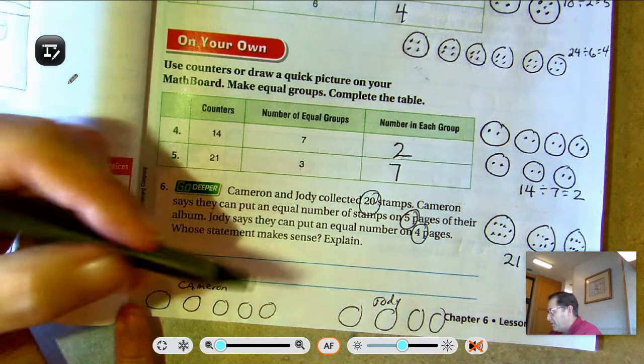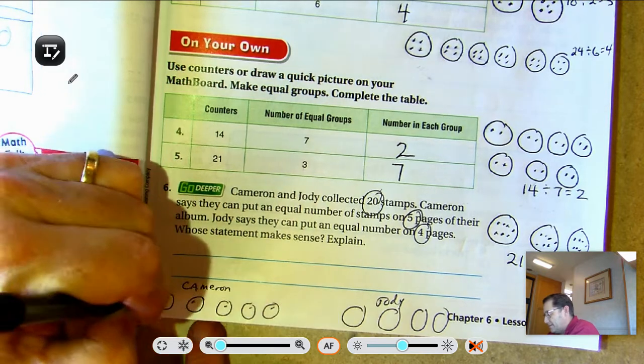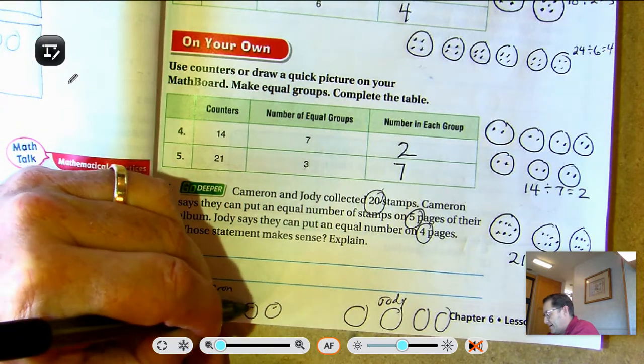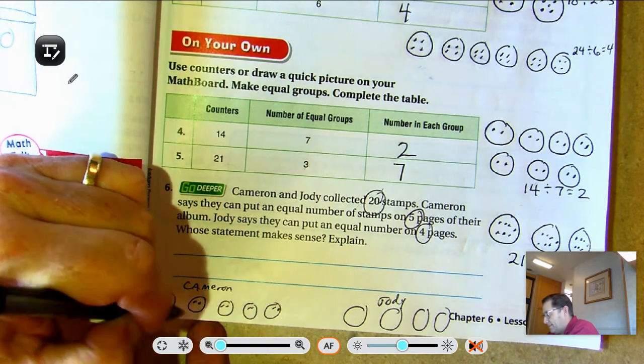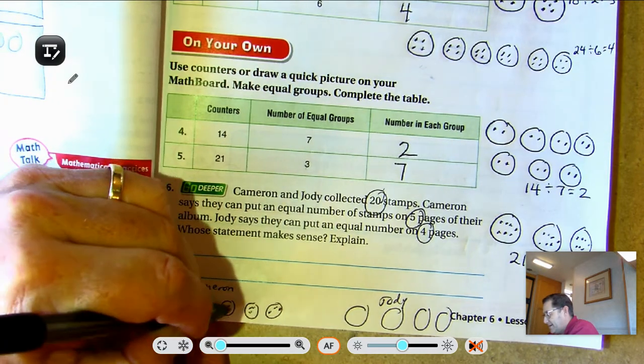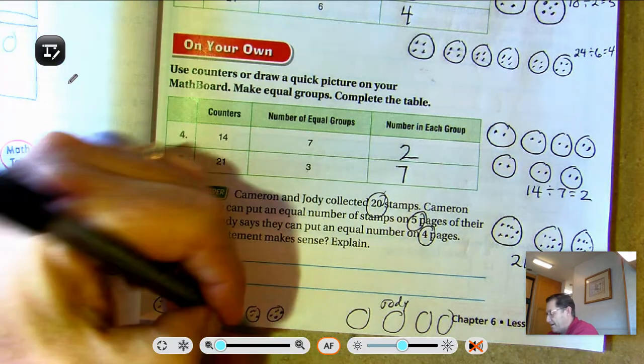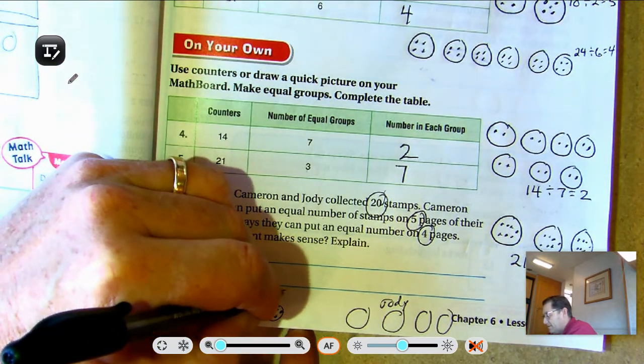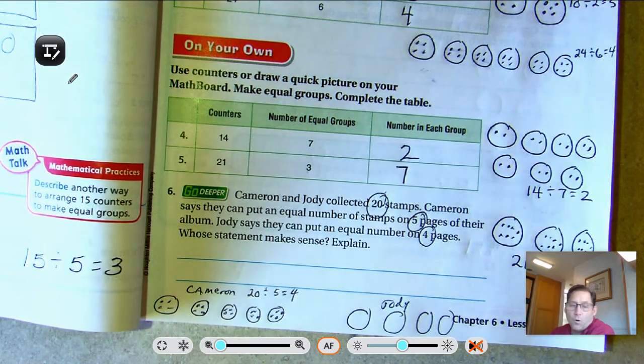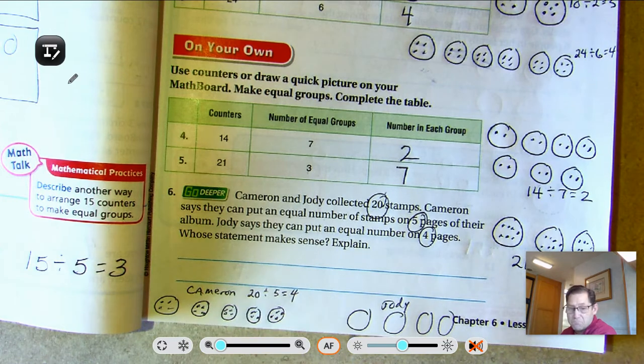So just share the 20 with both of these. So 1, 2, 3, 4, 5, 6, 7, 8, 9, 10, 11, 12, 13, 14, 15, 16, 17, 18, 19, 20. All right, so he shared 20 divided by 5 equals 4. He put 4 into each group, right? 4, 8, 12, 16, 20. All right, so his is right for sure.